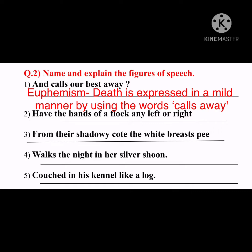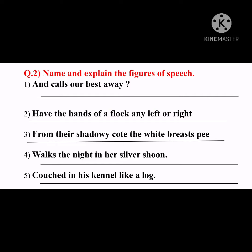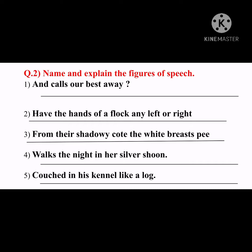Number two: 'Have the hands of a flock any left or right?' This is antithesis — opposite words used in the same sentence. 'Left or right' illustrates this. Number three: 'From their shadowy code the white priest pip.' This is inversion — the words are not arranged in correct order. It should be 'The white priest pips from their shadowy code,' but it is not given in sequence, so it is inversion.